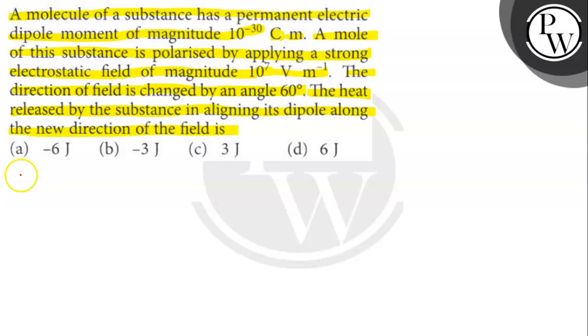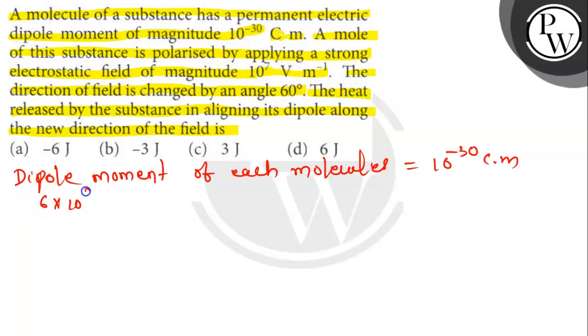So dipole moment of each molecule equals 10 to the power minus 30 coulomb meter. As one mole of the substance contains 6 into 10 to the power 23 molecules,